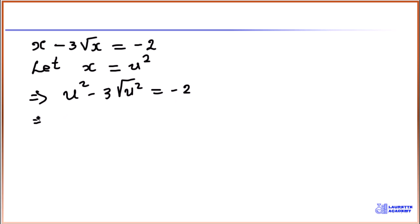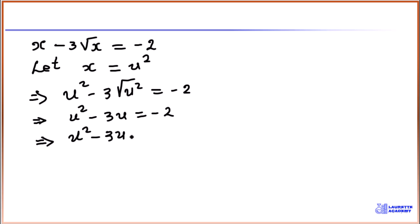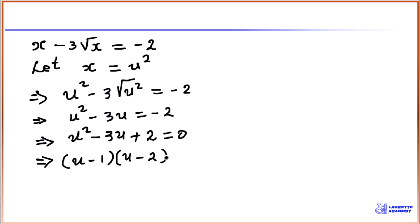This implies u squared minus 3 times u is equal to minus 2. Adding 2 to both sides gives us u squared minus 3u plus 2 is equal to 0. This is a quadratic equation which we can easily solve by factorization: u minus 1 times u minus 2 is equal to 0.